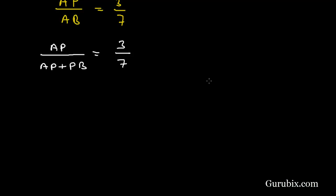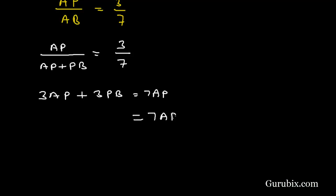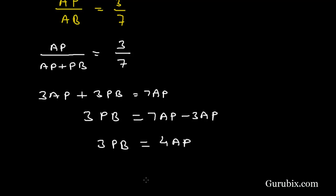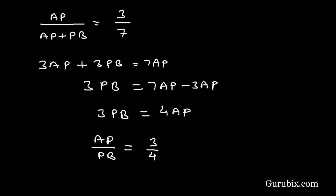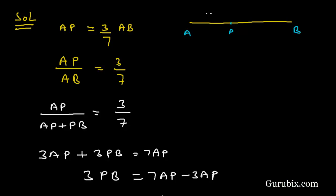Cross multiplying, we get 3·AP + 3·PB = 7·AP, which gives 3·PB = 7·AP − 3·AP = 4·AP. Therefore AP over PB equals 3 over 4, so the ratio is 3:4, where m1 = 3 and m2 = 4.